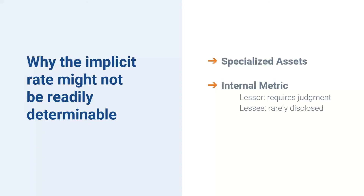From the lessee's standpoint, that information is rarely disclosed. If you were to approach your lessor, they probably wouldn't be eager to share it. There may also be variable factors, as outlined in our example. If the calculations were strenuous — especially if you have a sizable portfolio — the implicit rate may not be the route you want to take. In reality, the vast majority of clients go down the route of using an incremental borrowing rate instead of an implicit rate.